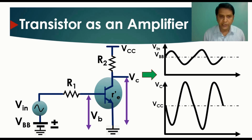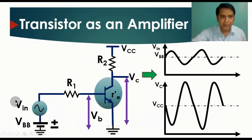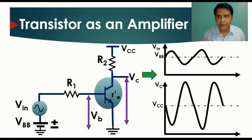Let us understand the AC and DC quantity notation used in transistor amplifier analysis. A capital letter V with a capital letter subscript — such as VBB or VCC — represents a DC quantity. A capital letter V with a small letter subscript — such as VIN or VC — represents an AC quantity.